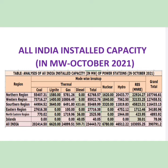Again, within thermal, there are four sub-parts: coal, lignite, gas, and diesel, and all contribute to total installed capacity in India. If you look at that figure, the total is 390 gigawatt, out of which renewable energy resources contribute 103 gigawatt, thermal contributes 234 gigawatt, nuclear is 6,780 MW, and hydro is 46,512 MW.